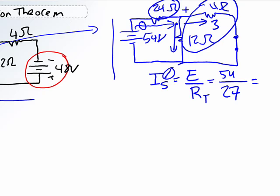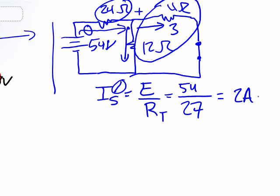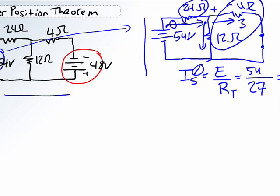So 54 divided by 27 is equal to 2 amps. Now, very important, which direction is it going? It's going this way. So now, at this point, we would reasonably suspect that it's going to split so this one goes down and that one goes that way.